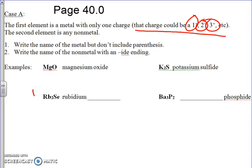We'll go right to this example since we've already done problems like this. The very first element is rubidium, element 38. And then the second element is element 34, which is selenium. So we write the name of the metal and then we write the name of the non-metal with an -IDE ending — so that would be selenide. Stop the video and try the next one.